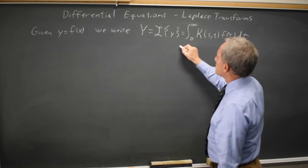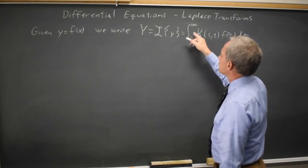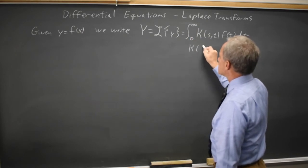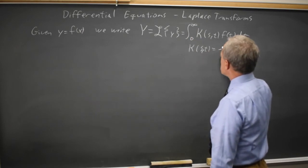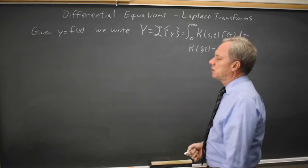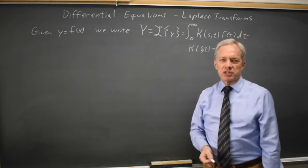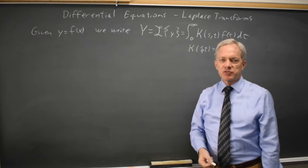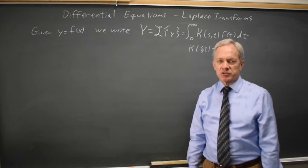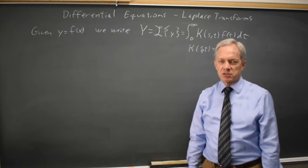For the Laplace, a and b are 0 to infinity for our limits of integration, and k of st equals e to the negative st. For the Fourier transform, k of st will be a different function, and for wavelet transforms, it's yet another function. It depends on your objective.